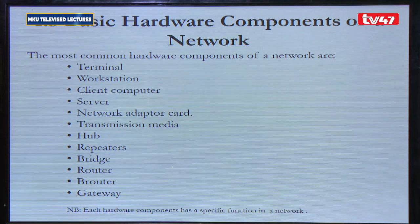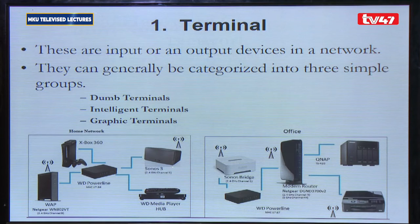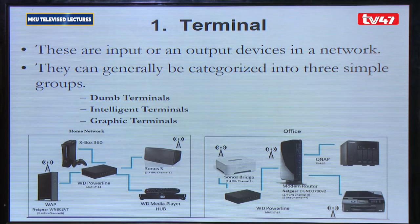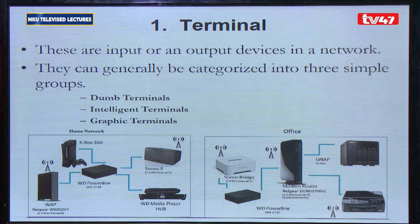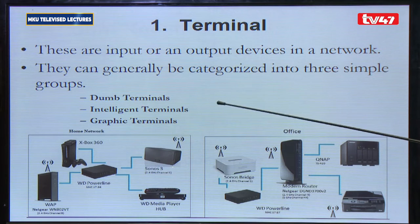We start with a terminal. A terminal is a network device whose function is to act as an input or an output device in a network. They are classified into three types depending on what kind of terminal it is: it can be a dumb terminal, an intelligent terminal, or a graphic terminal. A dumb terminal, as the name indicates, is just an input or output device — it can be a screen, a keyboard, or a mouse.